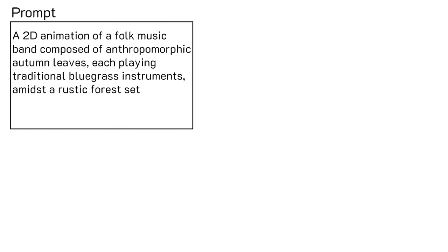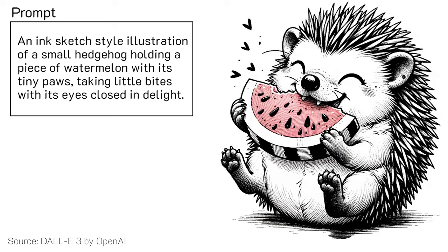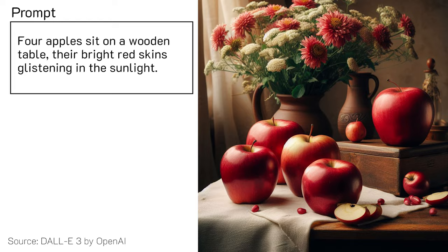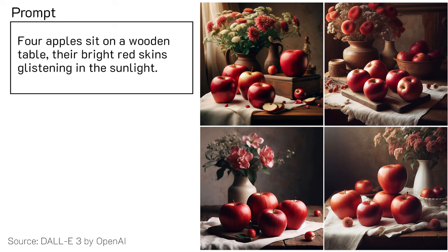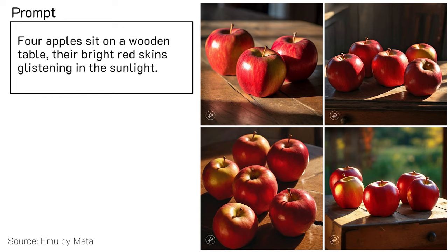Text-driven image generation models can now synthesize images of diverse objects and scenes. These models translate complex texture descriptions into highly detailed and accurate images. However, it seems that the model doesn't know how to count. Other state-of-the-art models also have similar issues, like Midjourney, Emu from Meta, or Firefly from Adobe.